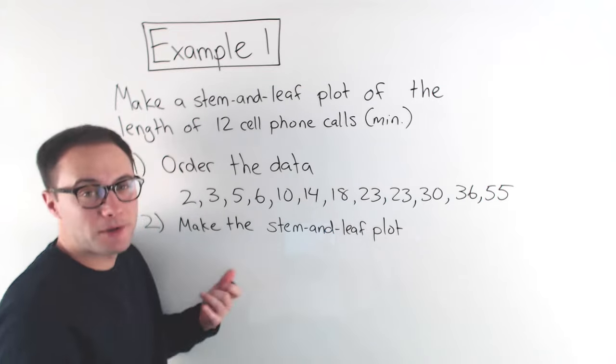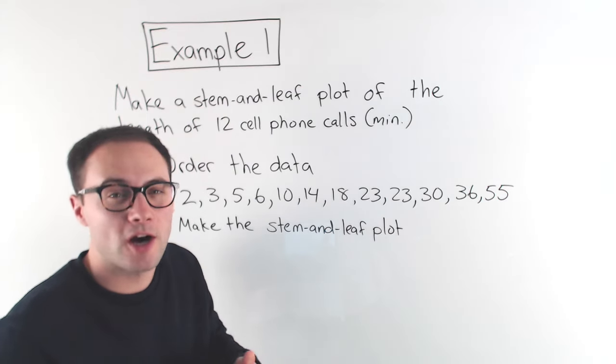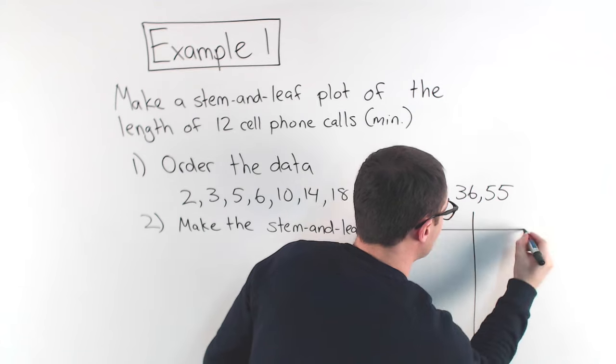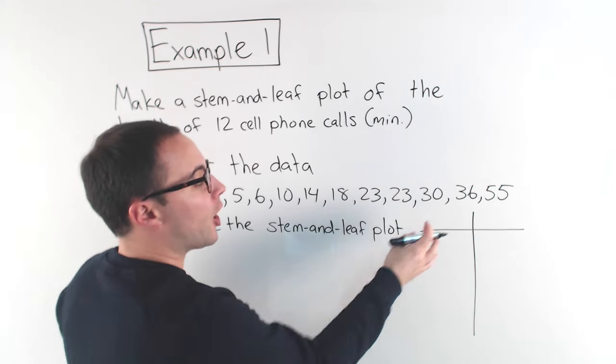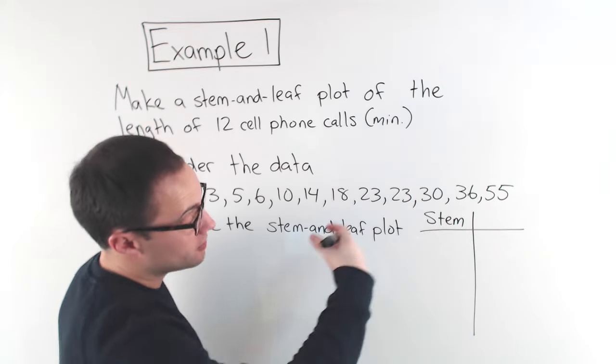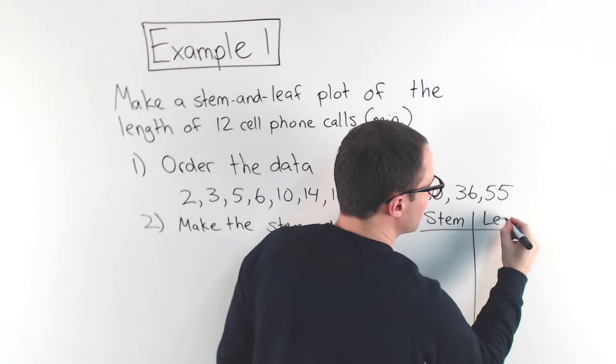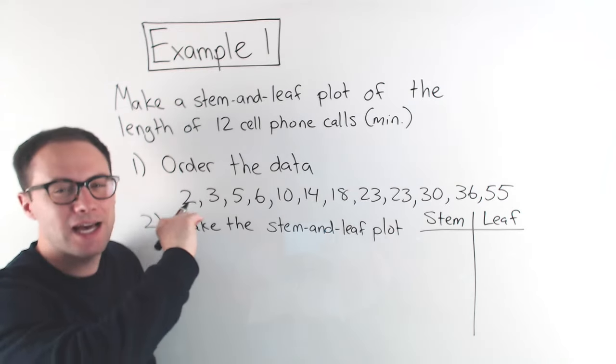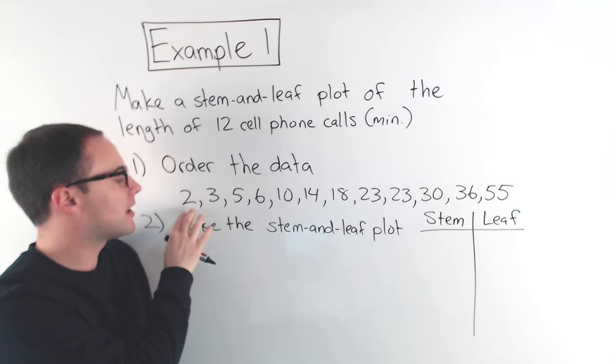Now, step two: make the stem and leaf plot. To do that we start off with a cross. On the left, top left, you're going to write stem, that's where the stem goes, so naturally on the right is where the leaf is. Now, from here, you have to decide what your stem's going to be.